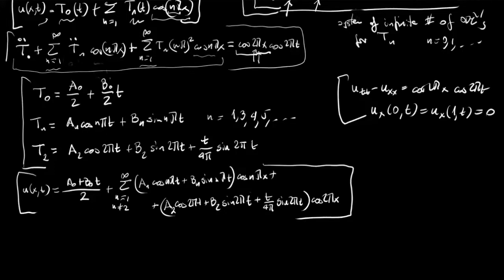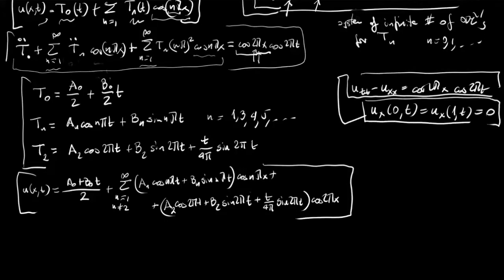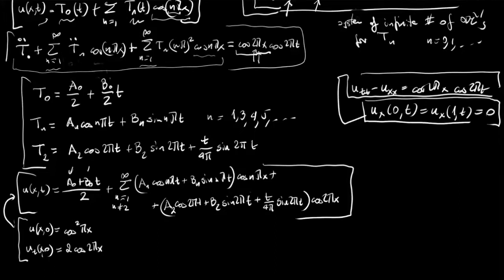Writing it all together, u(x,t) = a_0/2 plus the sum from n=1 to infinity (n not equal to 2) of [a_n cos(n pi t) + b_n sin(n pi t)] cosine(n pi x), plus the n=2 term with the particular solution included. This is a solution of the wave equation satisfying the boundary conditions. Now we want this solution to satisfy our initial conditions: u(x,0) = f(x) = cosine^2(pi x) and u_t(x,0) = 2cos(2pi x). By imposing these, we determine a_0, b_0, a_n, b_n, and in particular a_2 and b_2.